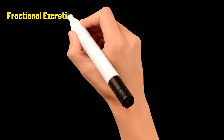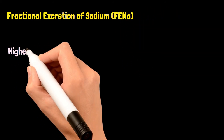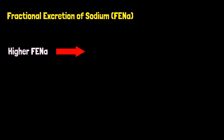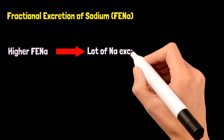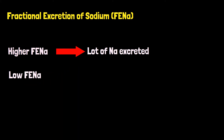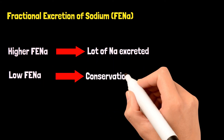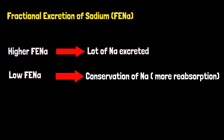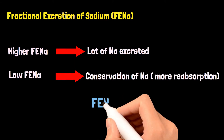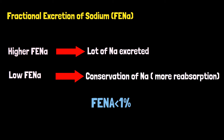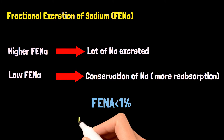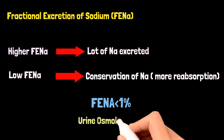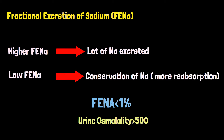Another tool clinicians use to assess pre-renal AKI is the fractional excretion of sodium, or FENa. A higher FENa value means a lot of sodium is being excreted, while a low FENa means we are conserving a lot of sodium. In pre-renal AKI, as a lot of sodium is being reabsorbed back into the blood, the FENa will be less than 1%. Since water is also being conserved, the urine will be very concentrated, and urine osmolality will be greater than 500 milliosmoles.